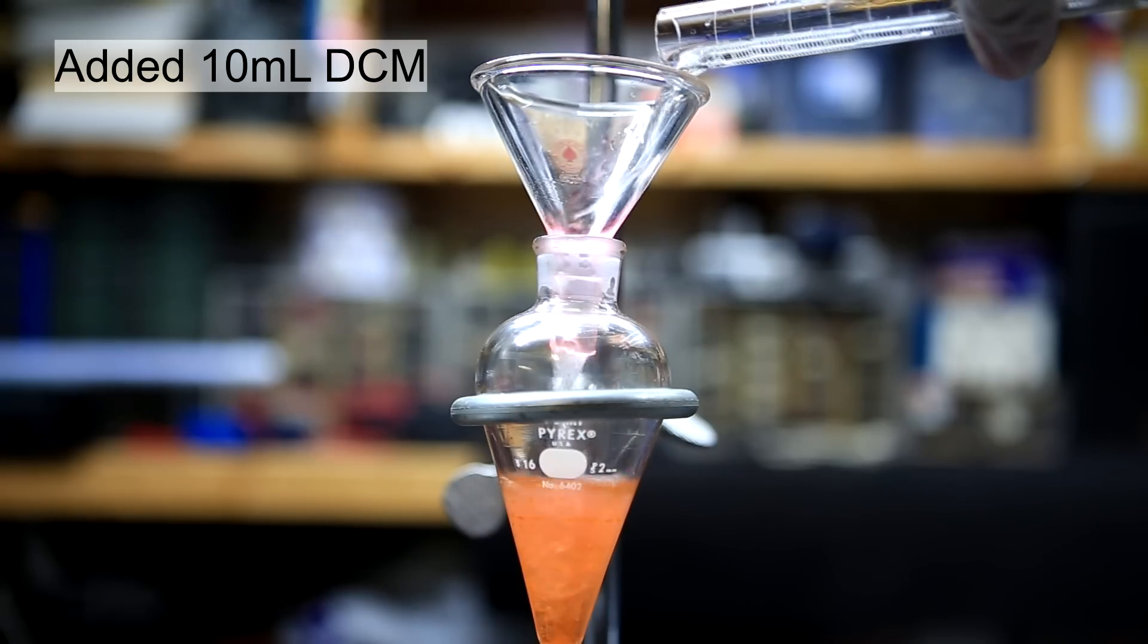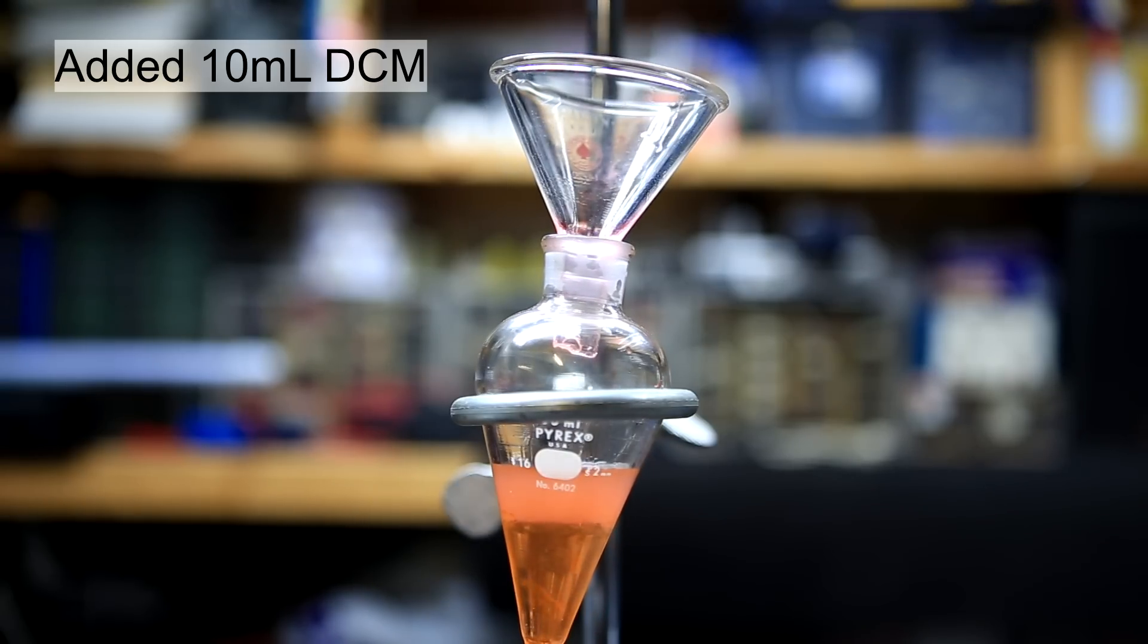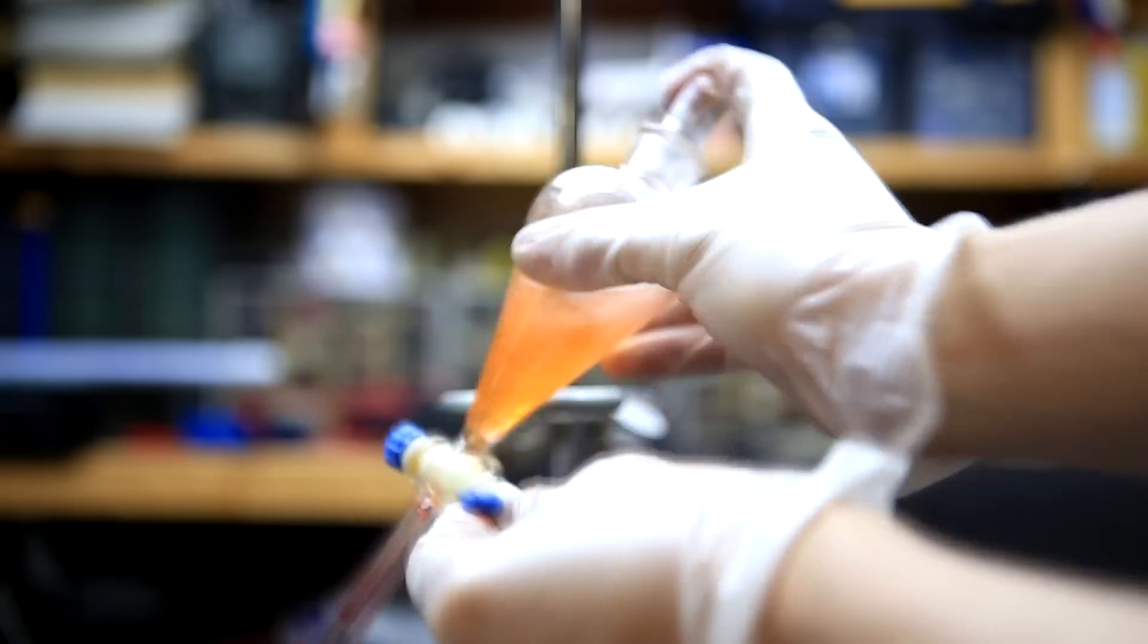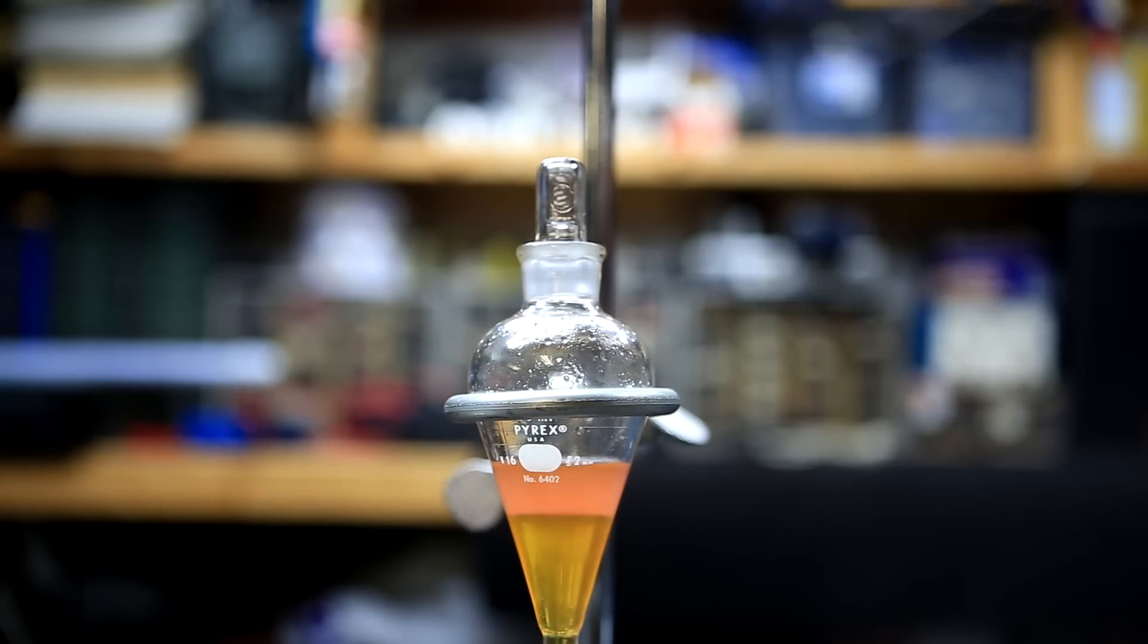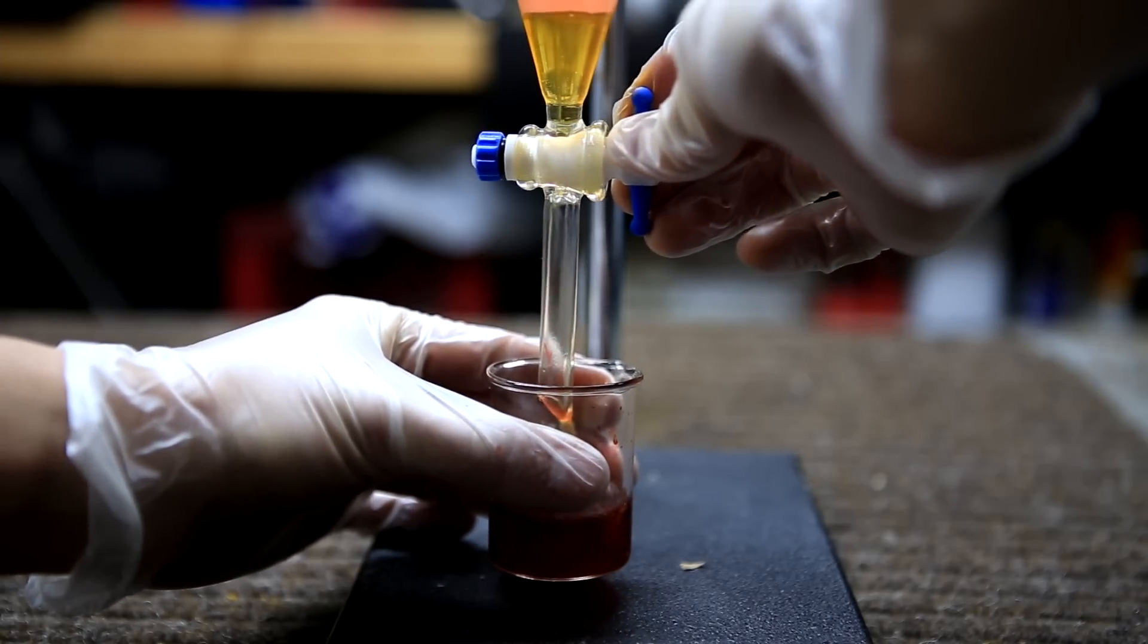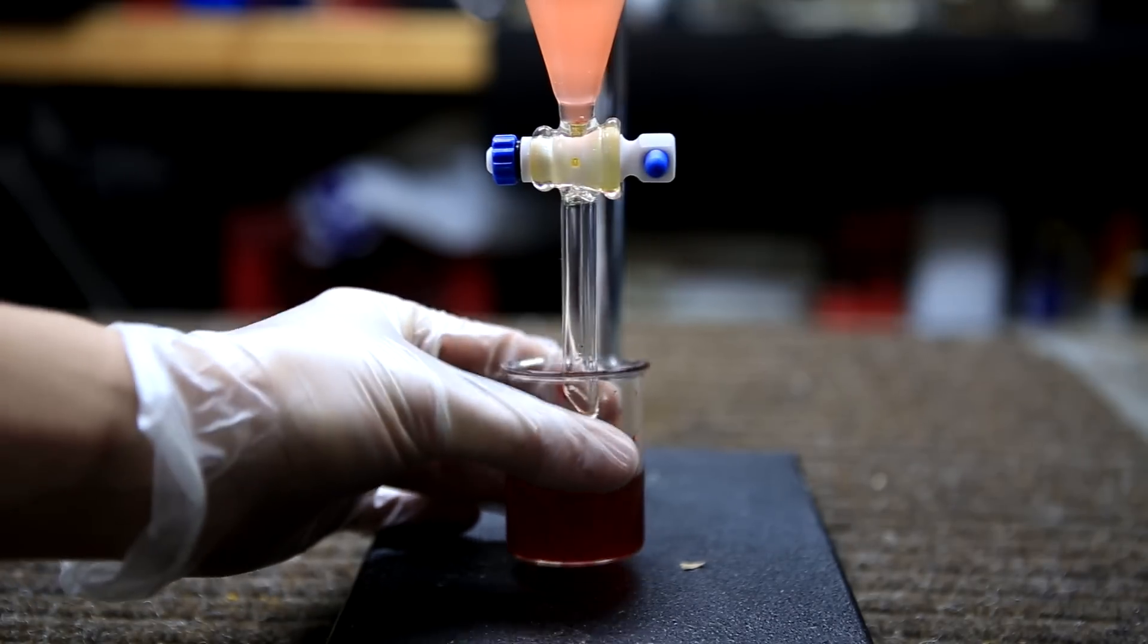Then, 10 more ml of DCM is added to the aqueous layer in the separatory funnel. Again, the separatory funnel was capped, shaken, and vented, and then the layers were allowed to separate. This time, the lower DCM layer is yellow and not a dark red, indicating that there is much less phenolphthalein present.